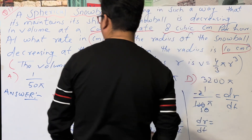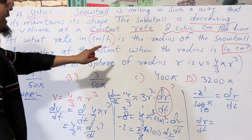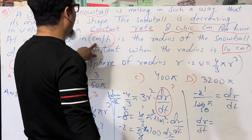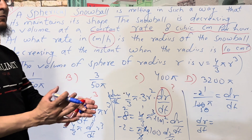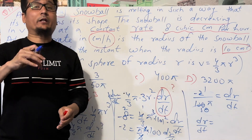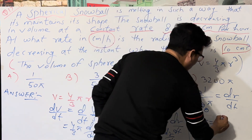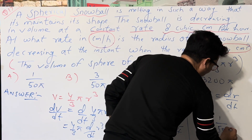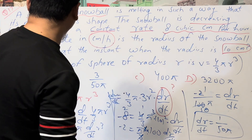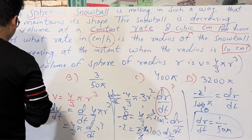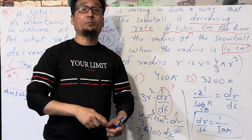The negative sign confirms the radius is decreasing, which matches the question asking about a snowball that is melting. Therefore dr/dt = -1/(50π) centimeters per hour, and the magnitude is 1/(50π). Answer A is correct. I hope you all understand — please watch my next video where we solve question number 18.